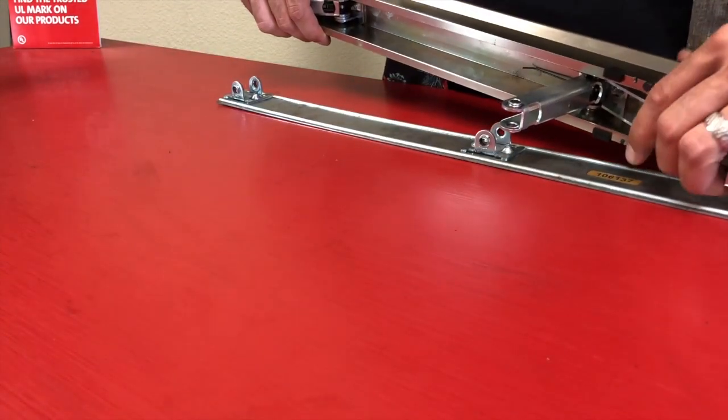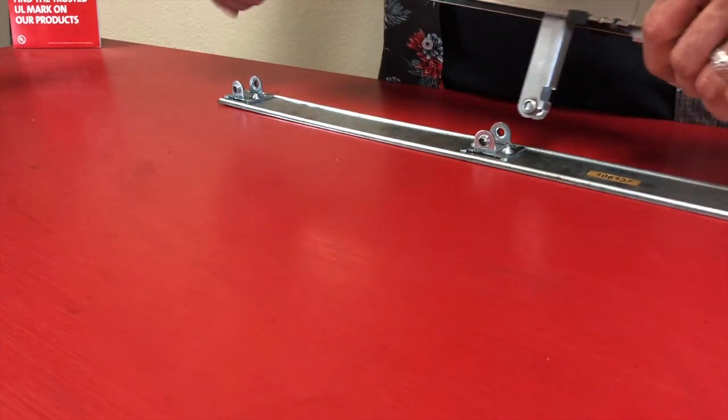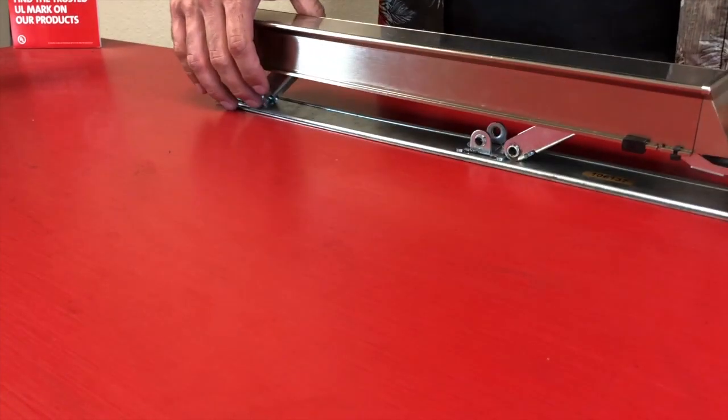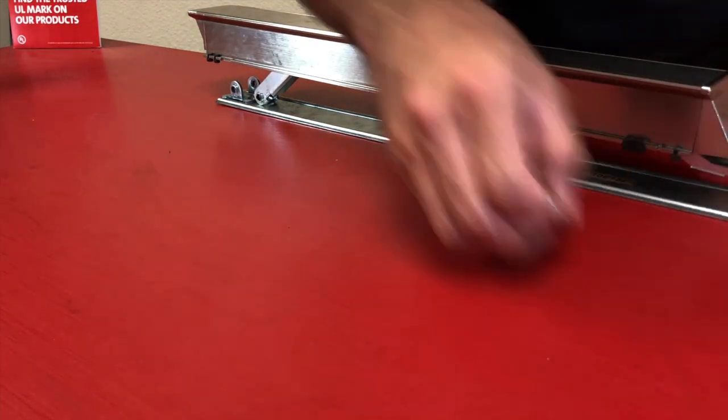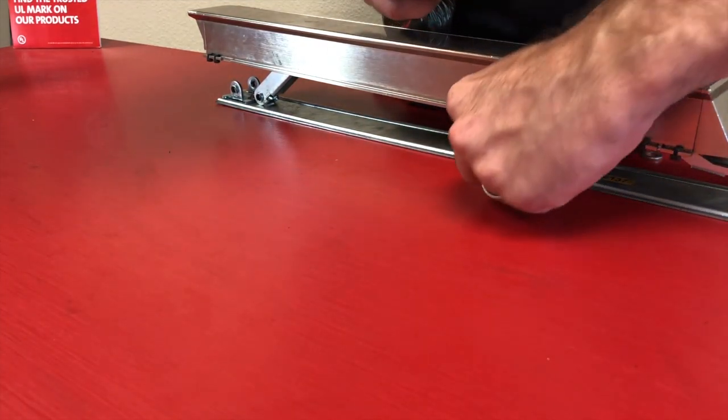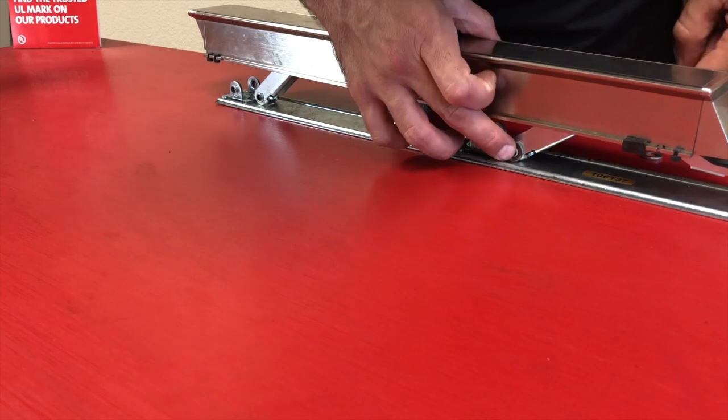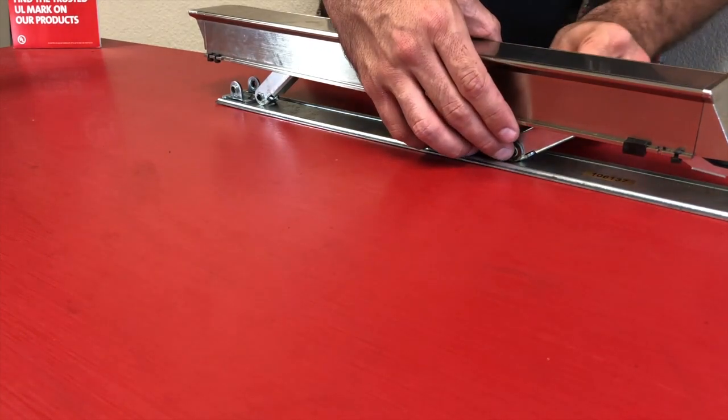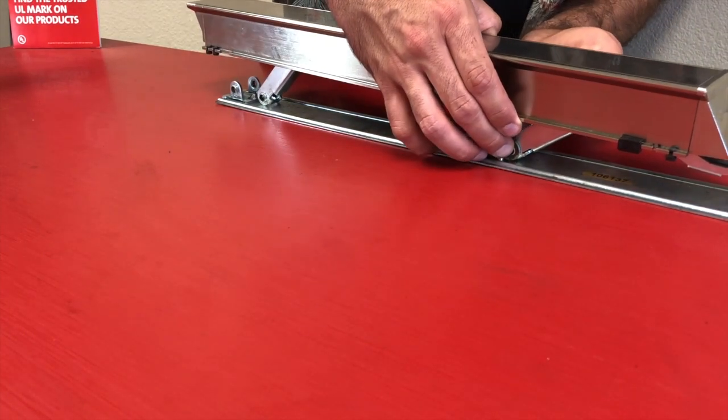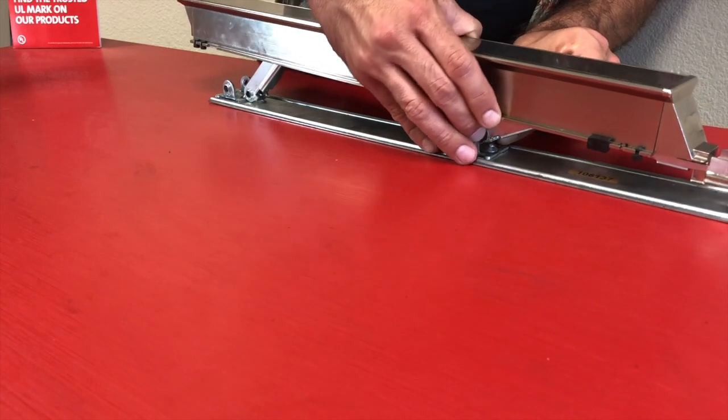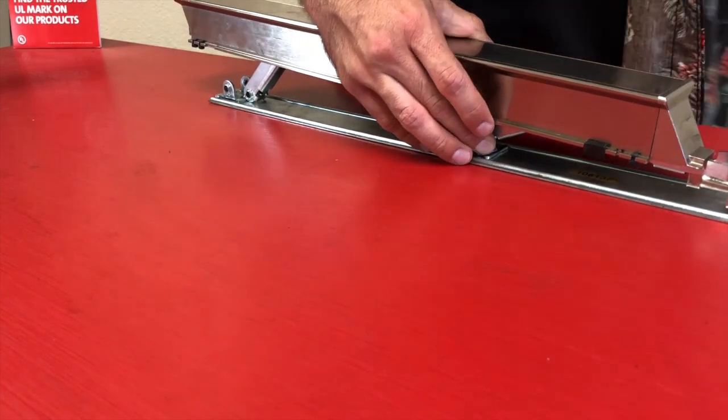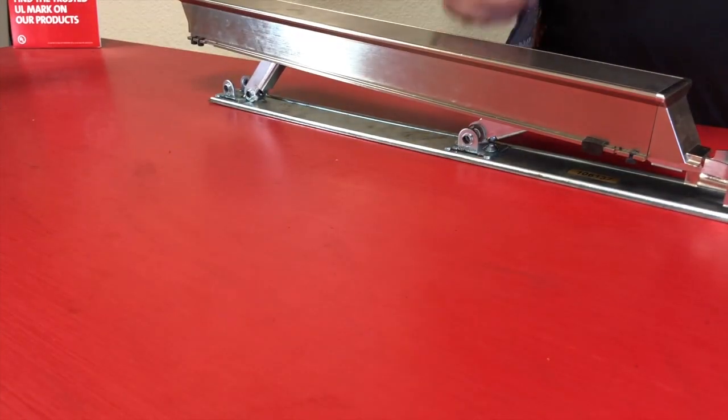Once it's back on the base rail we'll line up those two activating brackets with the existing mounting holes, but wait, we can't forget our metal washers. So we'll grab those and add them on the outside of the activating brackets before lining them up with the base rail and reinserting the pin to attach the push pad to the base rail.